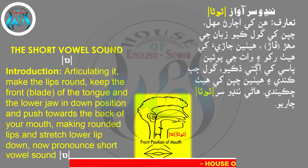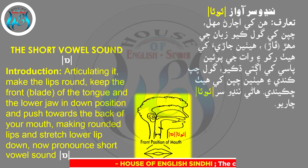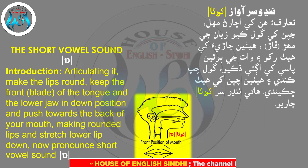The short vowel sound /ɒ/: articulating it, make the lips round, keep the front blade of the tongue and the lower jaw in down position, and push towards the back of your mouth, making rounded lips and stretching the lower lip down.